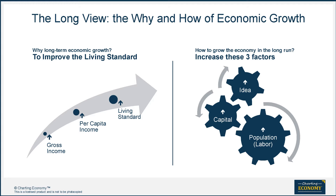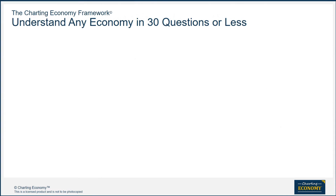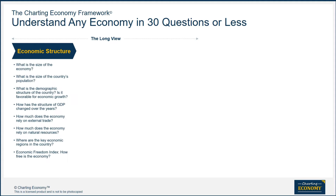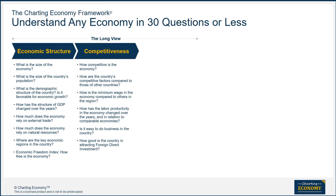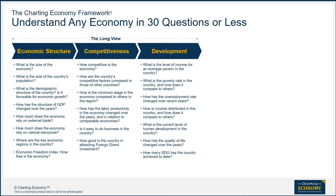What about spectators like us? We can ask questions that give us clues to assess those three factors and the results on people's well-being. In the long view, our framework divides the questions into three groups: economic structure, competitiveness, and development. Development is the eventual result of long-term growth that is in turn driven by economic structure and competitiveness.